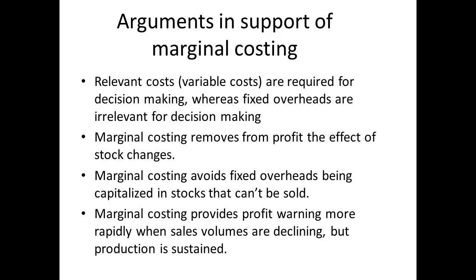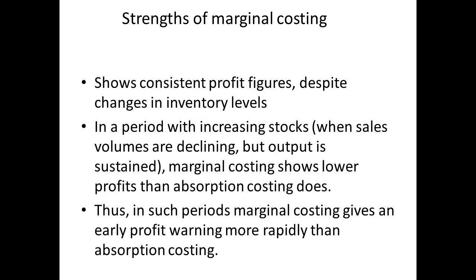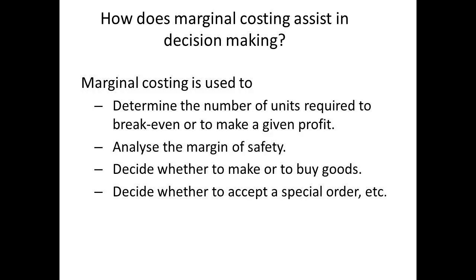There are a number of reasons why marginal costing might be preferred. They exclude the fixed overheads, they remove the effect of inventory change from profit, and they avoid putting overhead cost in inventory — which can be very important if the inventory were not able to be sold. Profit warnings will be more obvious with marginal costing when sales are declining. When inventory increases but sales decline and output is sustained, then marginal costing shows lower profits, which is why it gives an early profit warning. Marginal costing can also be used to determine units required for break-even or to make a given profit, to analyse a margin of safety, to decide whether to buy or make goods, and whether to accept special orders.